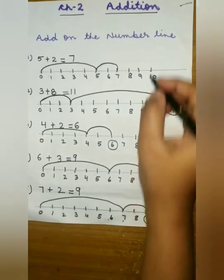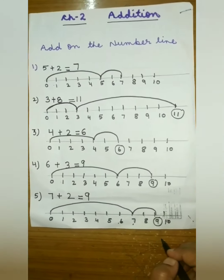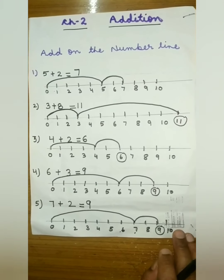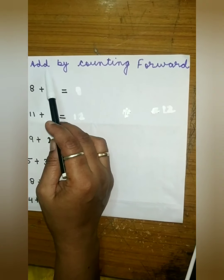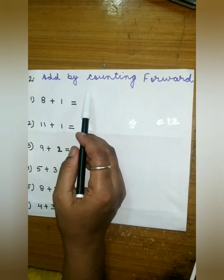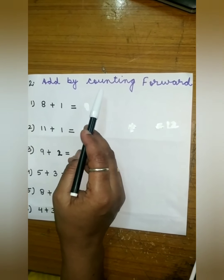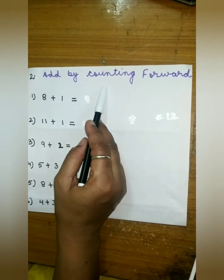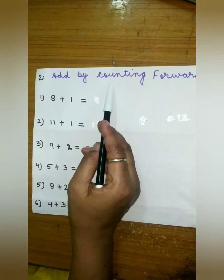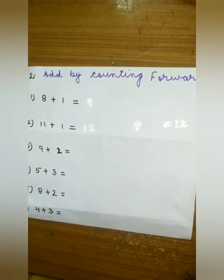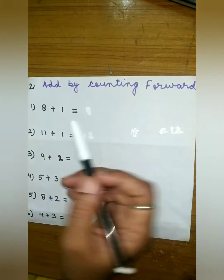These are the examples of addition on the number line. Write all these examples in your fair copy. The second topic is add by counting forward. In the previous chapter I already explained forward counting. Forward counting means when you count numbers from left to right — for example, one, two, three, four. When you count from left to right it is called forward counting.